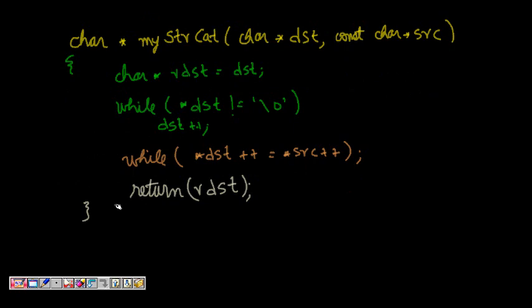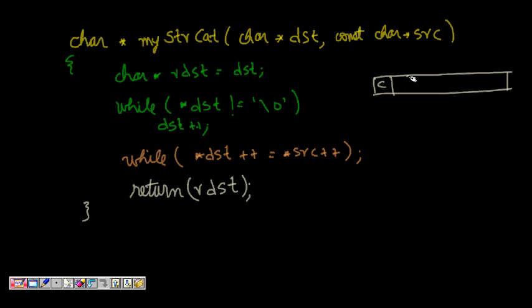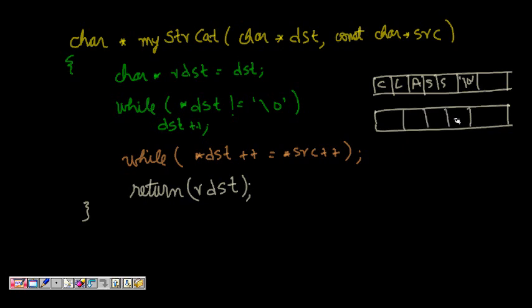We will use pointers to do that. If we look at the problem, we have 'class' followed by a null terminator '\0', and then 'room'. We have these two arrays and they are non-overlapping memory sets. We make our destination — this is destination and this is source.